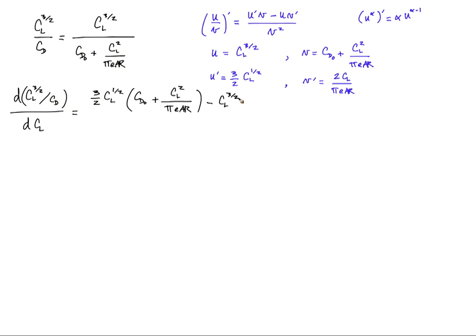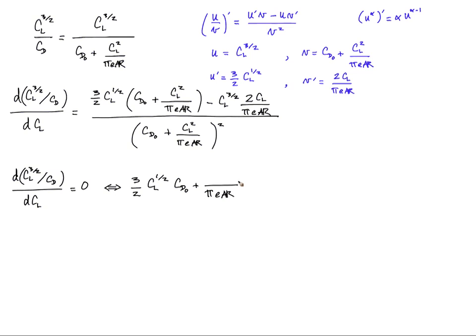Minus u times v prime, and all that divided by v squared. Now that means that for the derivative to be zero, the numerator needs to be zero. Let's simplify this a little bit by multiplying both sides by two thirds.